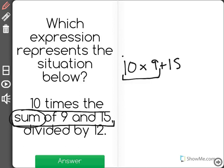But it wants us to multiply 10 times the sum of 9 and 15. That means the answer of 9 plus 15. So what I need to do then is use what I know about order of operations and say that everything in parentheses gets done first.